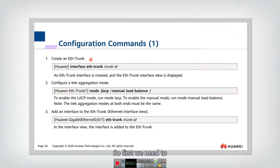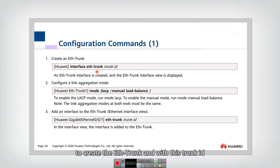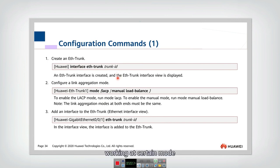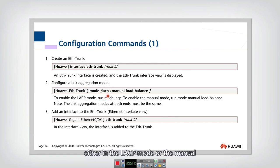First we need to create the Ethernet trunk. We can use this command to create the ether trunk with a trunk ID. We also need to configure it to work in a certain mode — it can be either LACP mode or manual load balance mode.